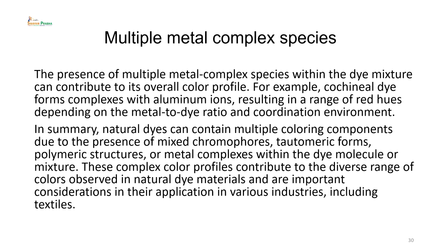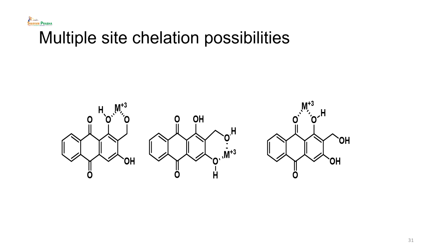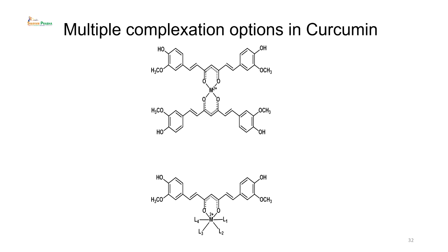So, we have come to an end of this lecture almost. Multiple metal complex species: the presence of multiple metal complex species within the dye mixture can contribute to the overall color profile. In summary, natural dyes can contain multiple coloring components due to the presence of mixed chromophores, tautomeric forms, polymeric structures, or metal complexes within the dye molecule or mixture. These complex color profiles are important considerations in various industries including textile. Multiple site chelation possibilities exist wherever there is a hydroxy and carbonyl — and multiple complexation options with curcumin can be seen as a good example. Thank you.